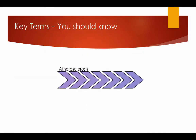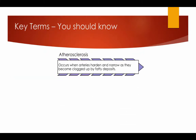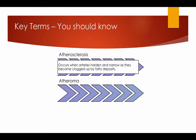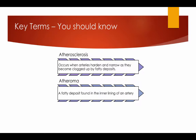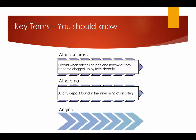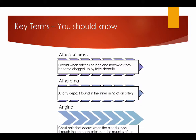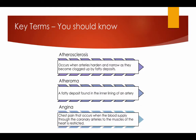Atherosclerosis key terms you should know: Atherosclerosis occurs when arteries harden and narrow as they become clogged up with fatty deposits. Atheroma is a fatty deposit found in the inner linings of an artery. Angina is chest pain that occurs when blood supply through the coronary arteries to the muscles of the heart is restricted.